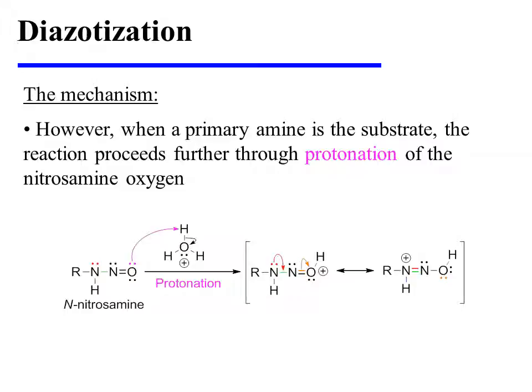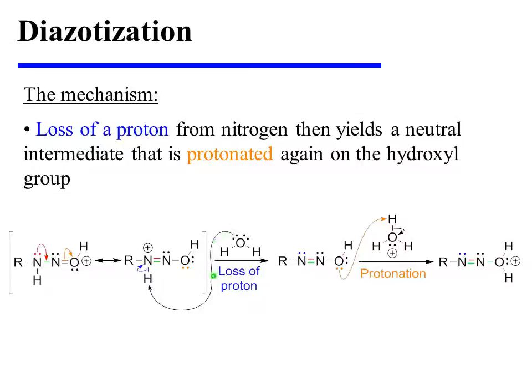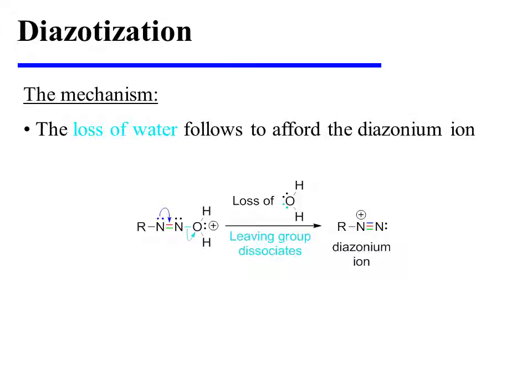However, when a primary amine is the substrate, the reaction proceeds further through protonation of the nitrosamine oxygen. This yields a resonance-stabilized cation. Loss of a proton from nitrogen then yields a neutral intermediate, and this neutral intermediate is protonated again on the hydroxyl group, forming a good leaving group. The loss of water follows to afford the diazonium ion.